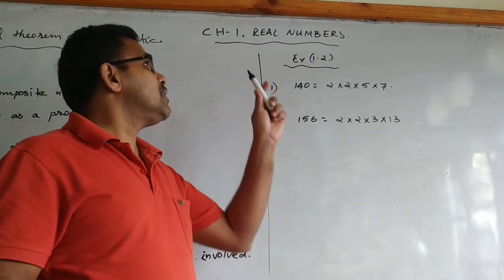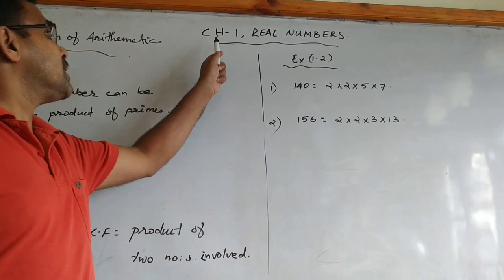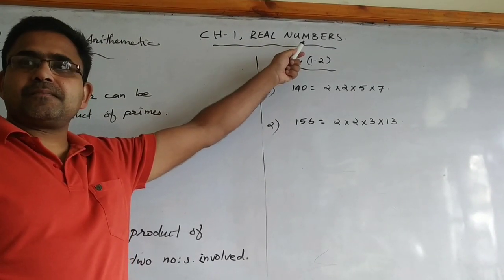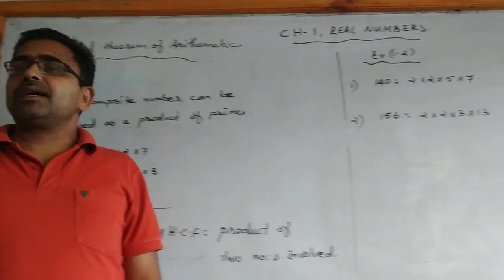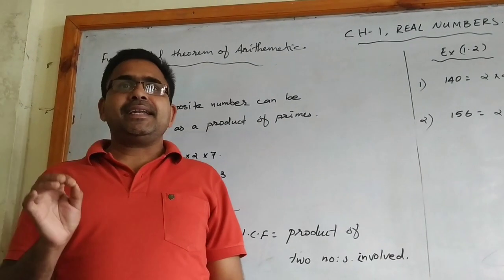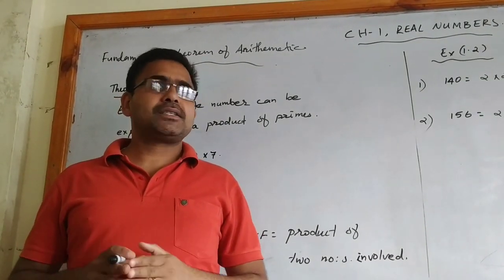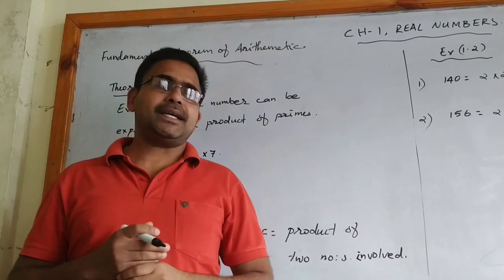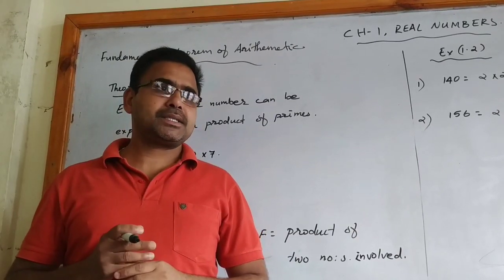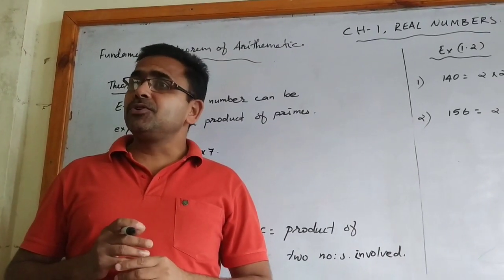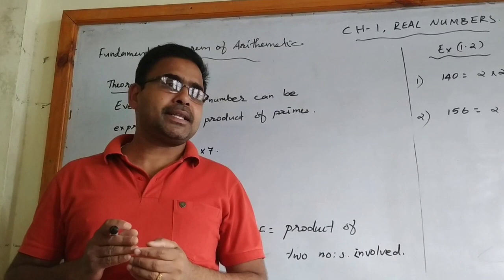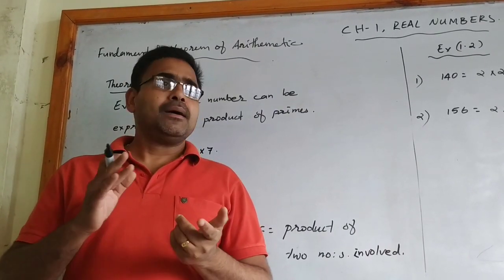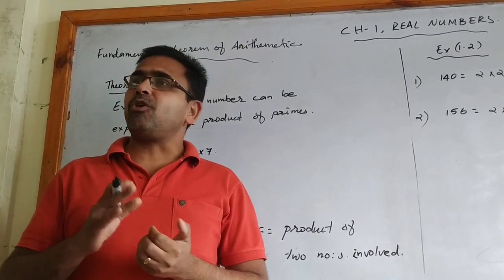We are studying chapter number 1, Real Numbers. In class 9 you have already studied the number system — just a continuation of that. Real Numbers include rational numbers, irrational numbers, prime numbers, and composite numbers.